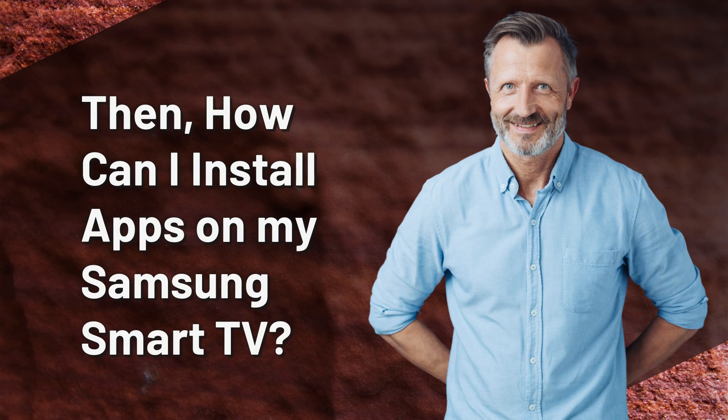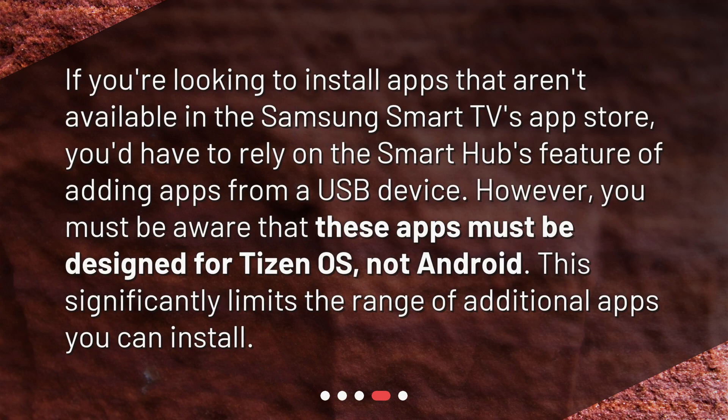Then, how can I install apps on my Samsung Smart TV? If you're looking to install apps that aren't available in the Samsung Smart TV's App Store, you'd have to rely on the Smart Hub's feature of adding apps from a USB device. However, you must be aware that these apps must be designed for Tizen OS, not Android. This significantly limits the range of additional apps you can install.